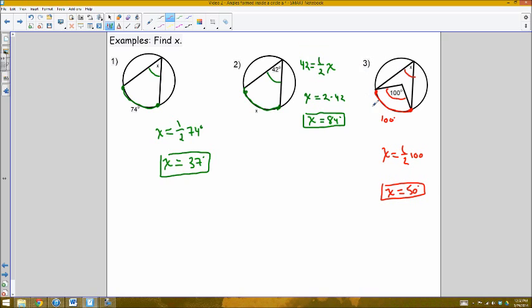Our two angle relationships that we've talked about thus far: central angles are exactly equal to the measure of the arc, and inscribed angles are half the measure of their intercepted arc.